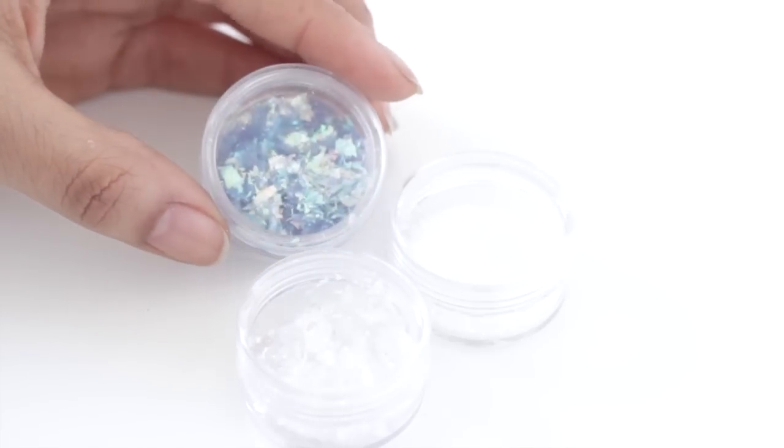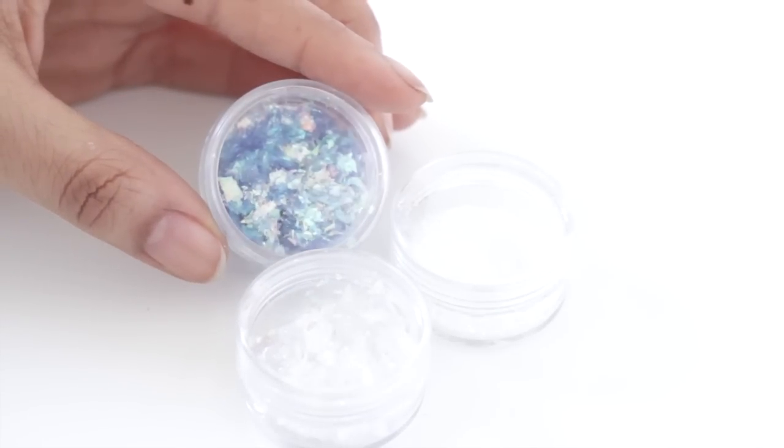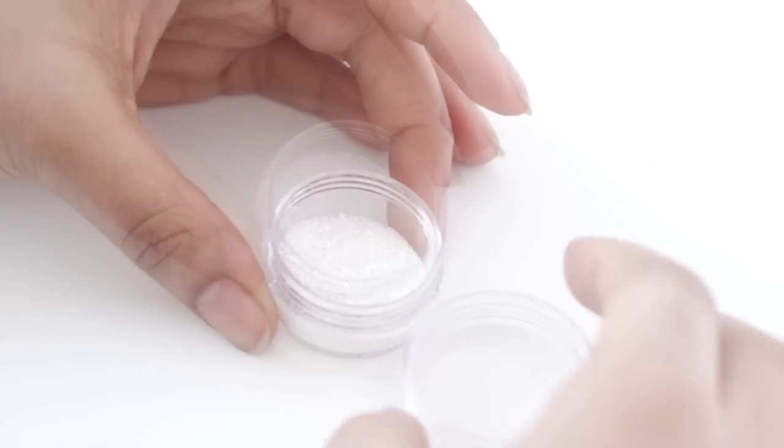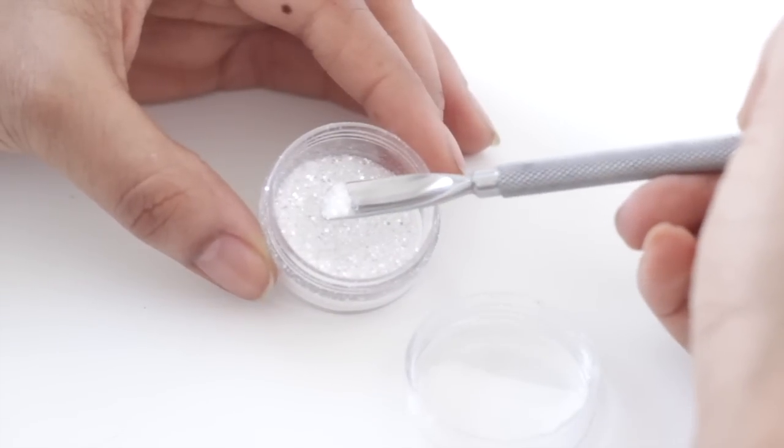Now you want to go through your nail art stash. You can either use a mylar or you can use a fine glitter. I'm opting for the glitter, but you can actually use anything that you want. And here's a little tip. If you're using pigments or fine glitter, you can always use your cuticle pusher as a spoon.